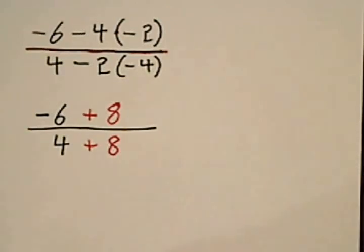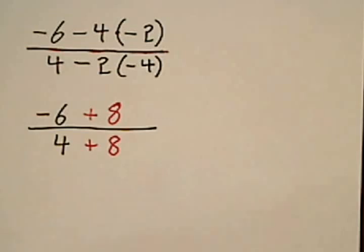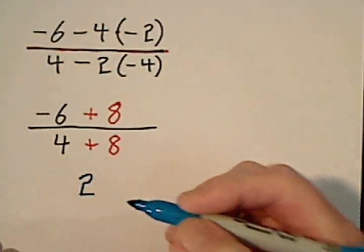And then for our next step, in the numerator, the signs are different. We subtract, keep the sign of the larger, so we get 2.